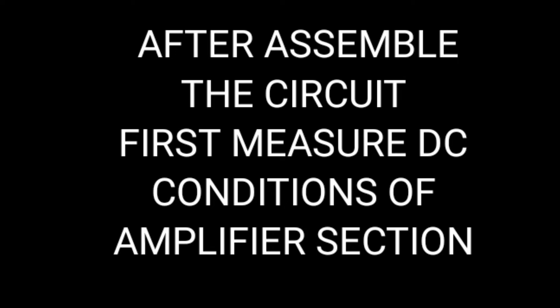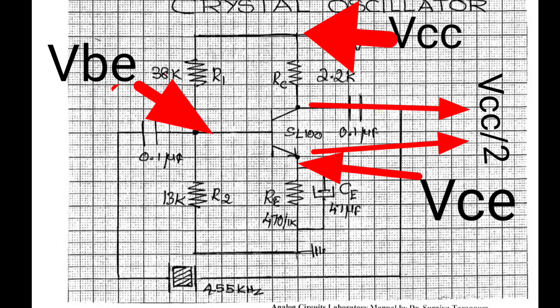After assembling the circuit, first measure the DC condition of the amplifier like this: VBE, VCC, VCC by 2, and VCE.